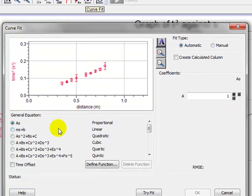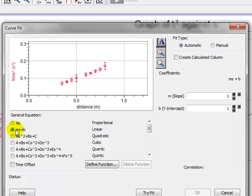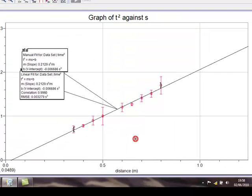If you want to put a manual line we press the Curve Fit button. This opens the Curve Fit window. Choose the Linear Fit. Then Try Fit will place the line on the points. We want to adjust the slope and the intercept so we press Manual and then OK.